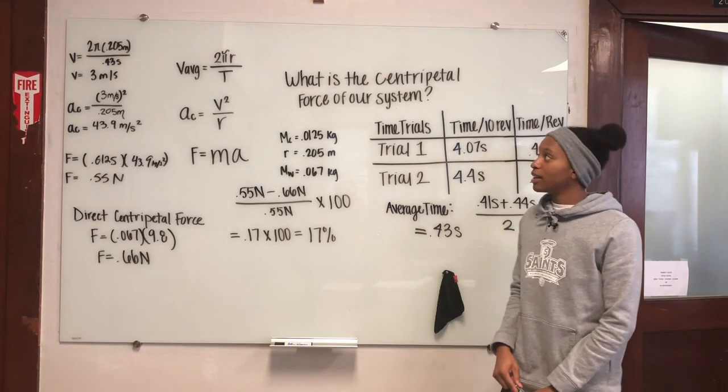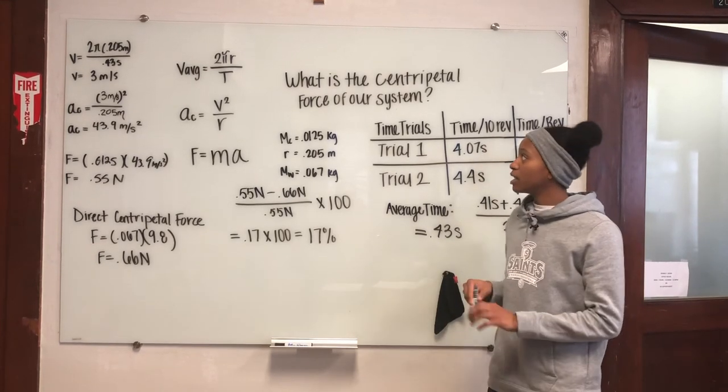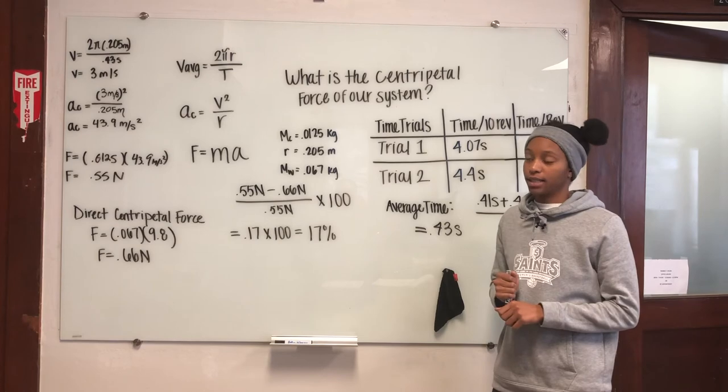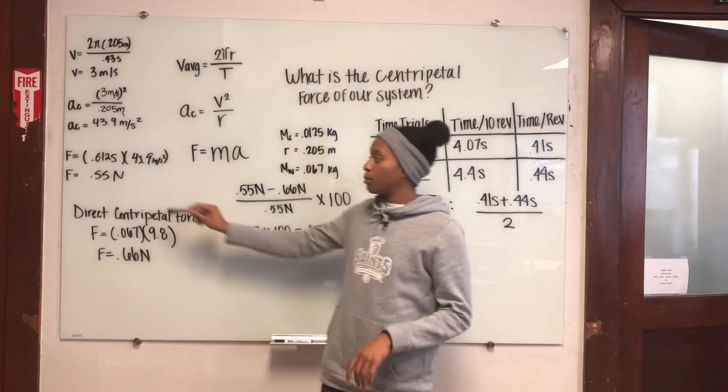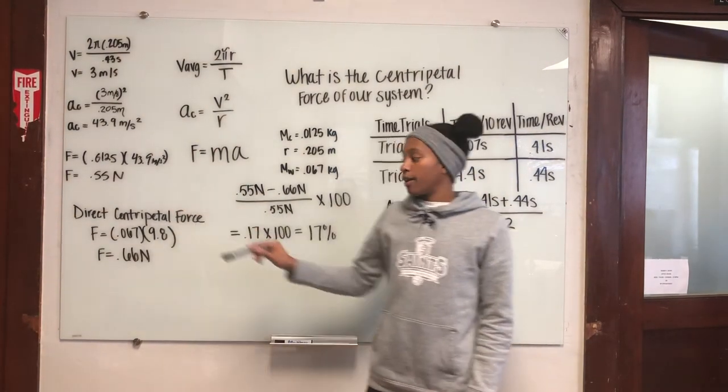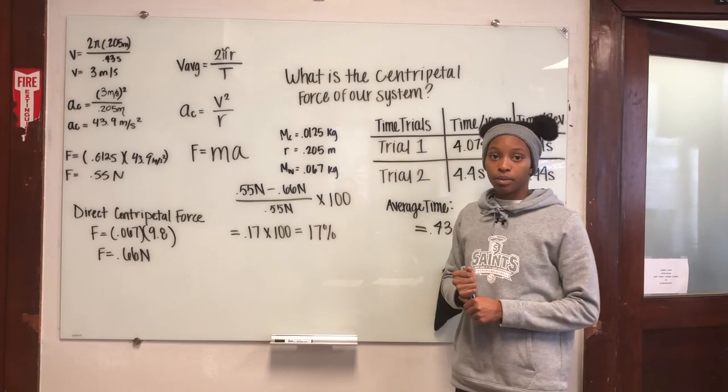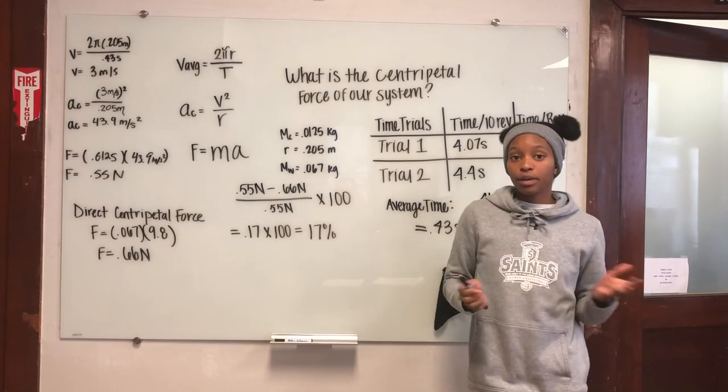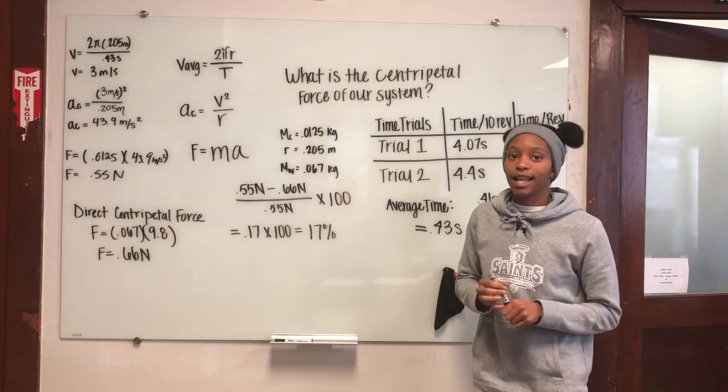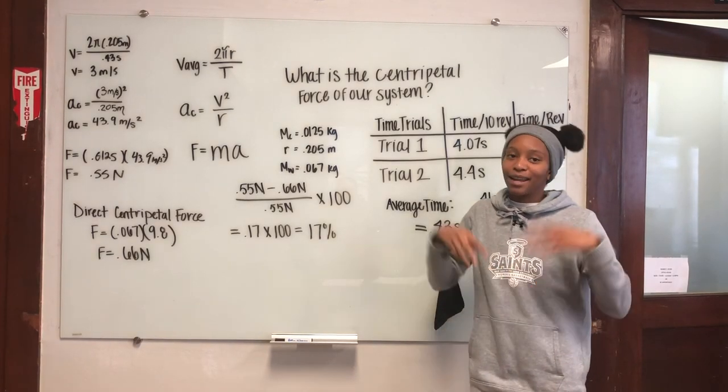So our question again for our experiment was what is the centripetal force of our system? Again, we came up with 0.55 newtons. And after doing the calculations, we only had about a 17 percent error, meaning we did pretty good for our experiment. And thank you for joining us. Again, my name is Lena Wilson.